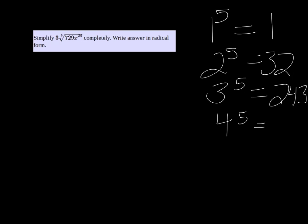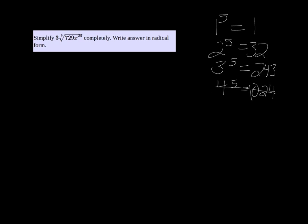4 to the 5th is 1024. Let me double check. Yeah. So 4 to the 5th is too big for our purposes, so we're going to scratch that out.